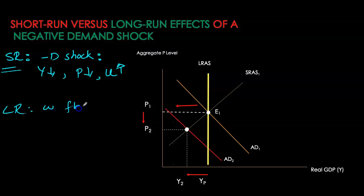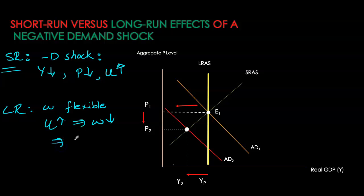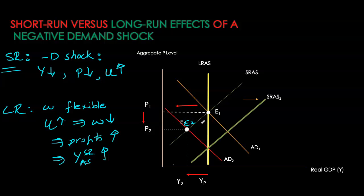In the short run, we were working with sticky wages. However, in the long run, we're working with flexible wages. With high unemployment, in the long run, wages are eventually going to be driven down because we have too many workers available but not enough jobs. As wages go down, they're going to increase profits of firms. So short-run aggregate supply curve is going to increase or shift to the right. Our initial shift was from E1 to E2 — that was the demand shock itself. But in the long run, because of wages adjusting and short-run production increasing, we have moved from E2 to E3.